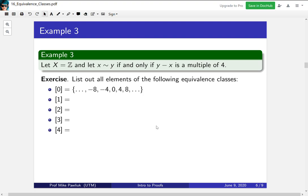And I've started one for you. This is the equivalence class of zero. So the elements of it are 0, 4, 8, 12, and so on, and minus 4, minus 8, minus 12, and so on. The way you can see this is the equivalence class of zero is all things that are related to zero. So when you plug that into the definition here, it's all y where y minus zero is a multiple of four. In other words, y is a multiple of four. So that's what we listed out here. Take a moment to complete the others.